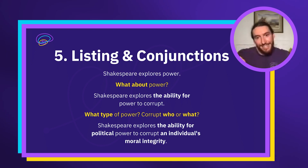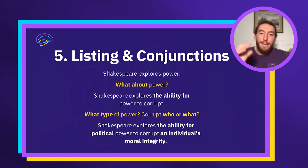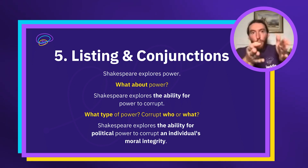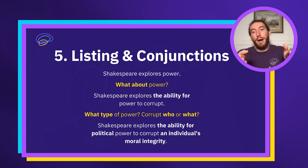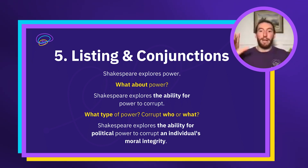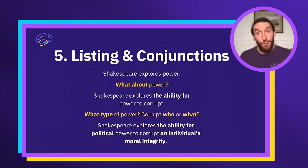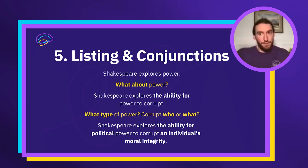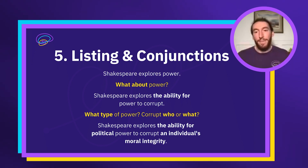Even at that second step where we said 'the ability for power to corrupt,' maybe that's a nice start for a short one-liner to begin the whole thing. But ideally you'd want the third sentence — the third layer. That's where it feels like: okay, you've said the type of power, you've said what it's doing (it's corrupting), and you've said what it's corrupting. I feel satisfied with that level of sophistication because it is specific.